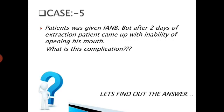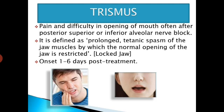Case No. 5. A patient was given an inferior alveolar nerve block, but 2 days after extraction the patient came with inability to open the mouth. What is this complication? The answer is trismus — pain and difficulty in opening of the mouth, often after posterior superior or inferior alveolar nerve block. It is defined as prolonged tonic spasm of the jaw muscles by which the normal opening of the jaw is restricted, which is why it is also called locked jaw.